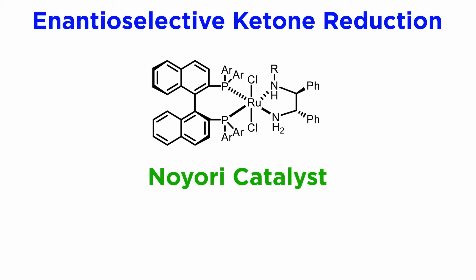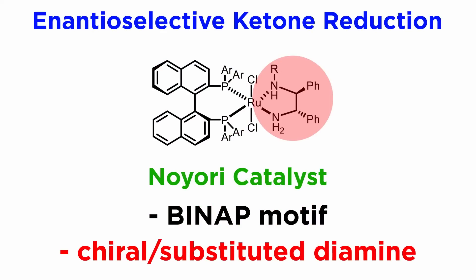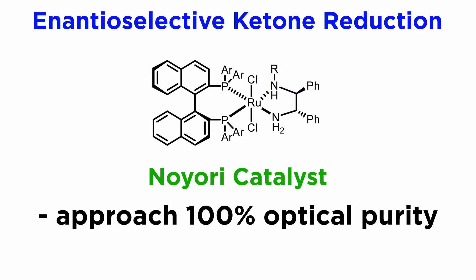The first highly effective catalysts to reduce ketones enantioselectively also came from Noyori's lab. These catalysts display a new architecture with respect to the ones used in olefin hydrogenation discussed in the previous tutorial. These Noyori catalysts use the same BINAP or aryl-substituted BINAP motif, but in this case the ruthenium II complex contains a second element of chirality.